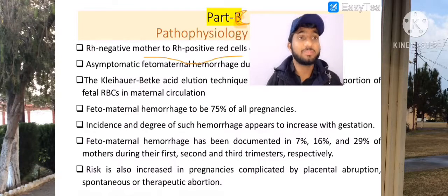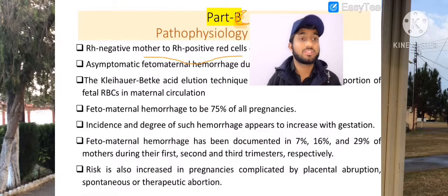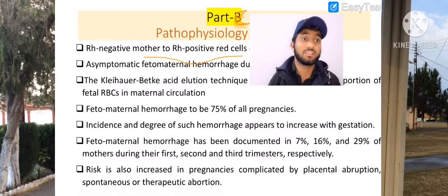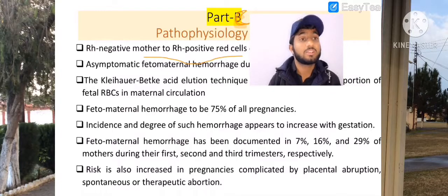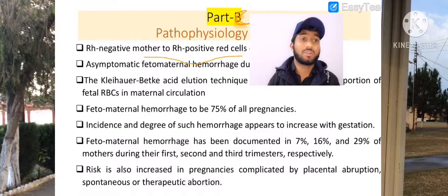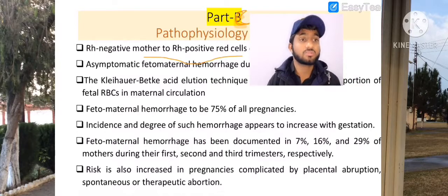This internal bleeding increases across trimesters — 7%, 16%, and 29%. What happens is that IgG antibodies can be transferred and can cross the placenta into the baby's bloodstream. Then RH antigens and RH positive antigens begin to bind with antibodies, and hemolytic reactions begin to start.